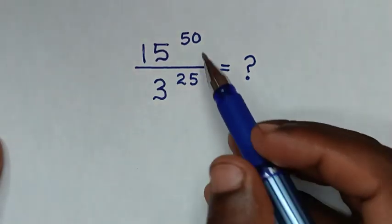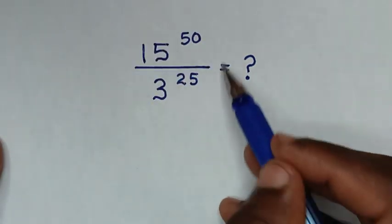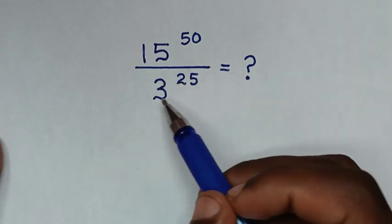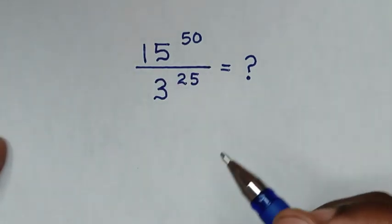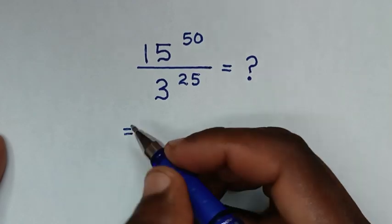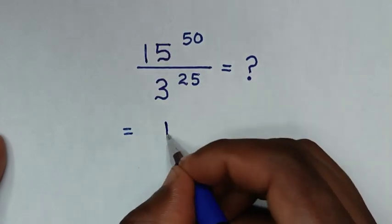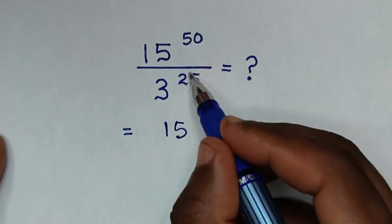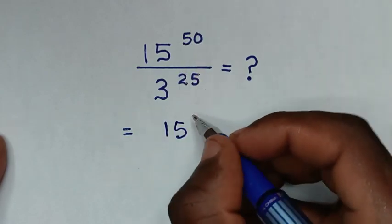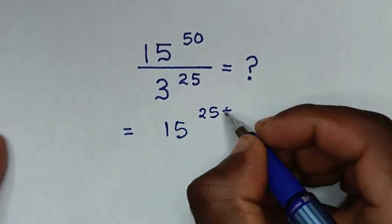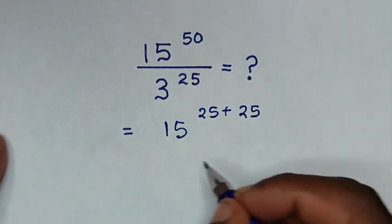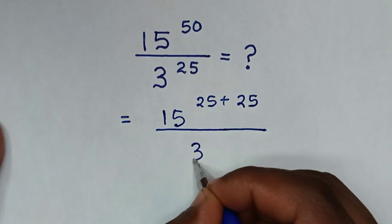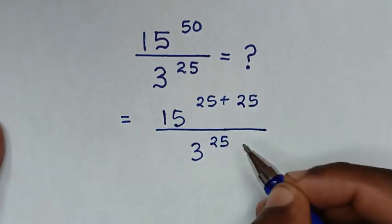Hello, you are welcome to solve this math problem: 15 power 50 over 3 power 25. It will be equal to — from the base of 15 power 50, we use a common power of 25. Since 50 is the same as 25 plus 25, we write it over the exponent 3 power of 25.